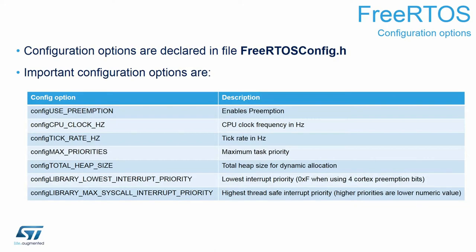The second component is about the CPU clock given in hertz — automatically set by STM32CubeMX. Then we've got the tick rate in hertz, defining how often our context would be switched. It configures one of the timers — in our case SysTick — to generate an interrupt that triggers the context switch. The next very important parameter is the number of priorities we will use in our application. Then total heap size defines how much RAM memory we will have to store the information about our operating system components.